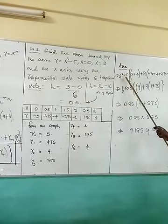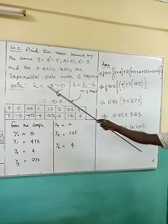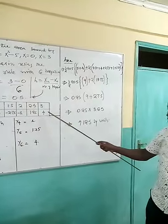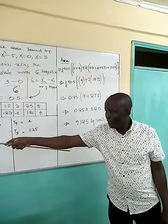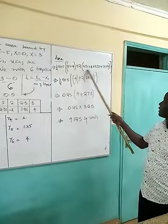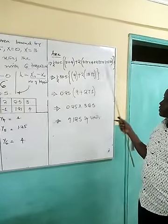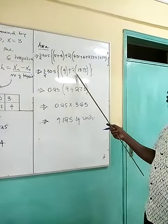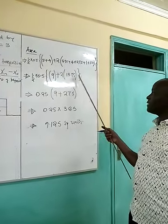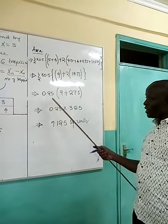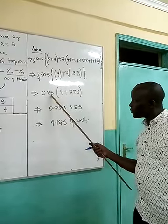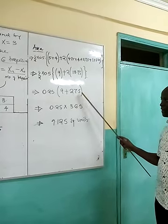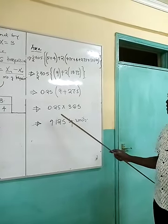So I'll have a half by 0.5, which was my h, then 5 plus 4, because they appear once. Even in the graph, but the rest will appear twice. So I'll have a half by 0.5 into 9, then plus 2 into 13.75, which gives me 0.25 into 9 plus 27.5.